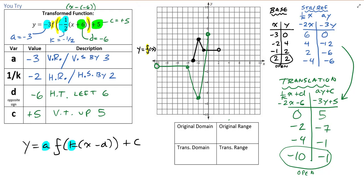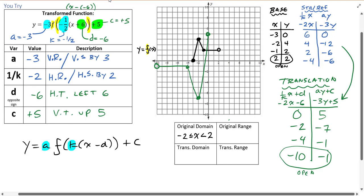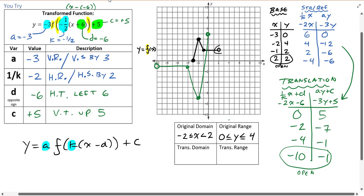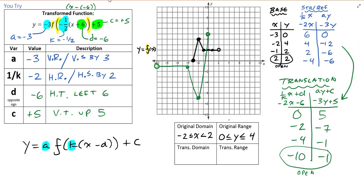Now let's talk about domain and range. For the original function f of x: the domain goes from x = -2 (farthest left, included) to x = 2 (farthest right, excluded because of the open point) — so negative two ≤ x < two. The range: the lowest y value is 0 and the highest is 4, and all values are included — so zero ≤ y ≤ four.